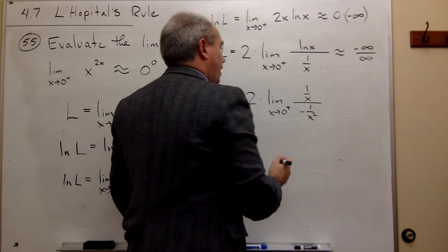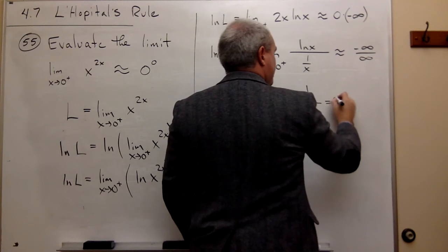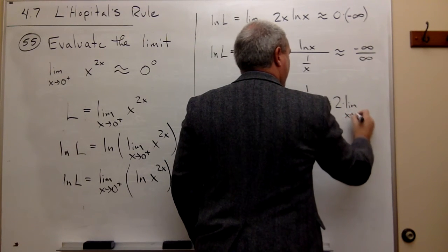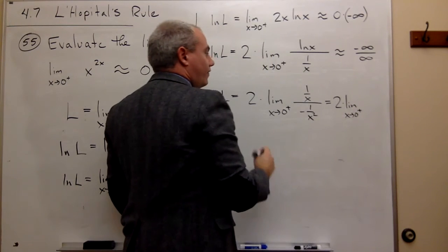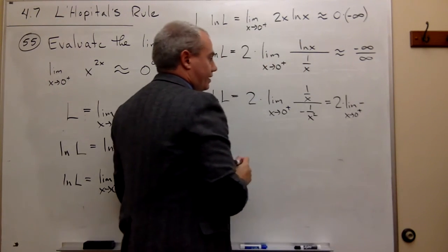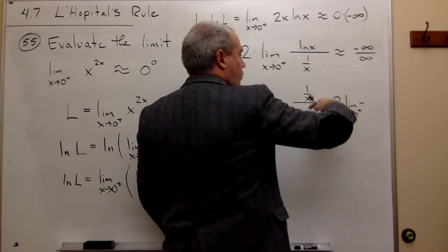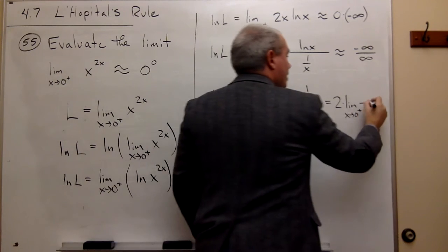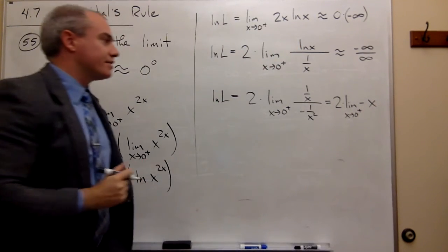We can flip and multiply that. And we get that this is 2 times the limit as x goes to 0 from the right of, if I flip and multiply this thing, I get negative what? The x squared is flipped and multiplied, so I get an x squared on top and an x on bottom. So I just get minus x.